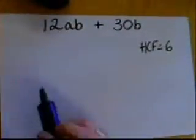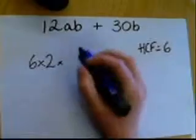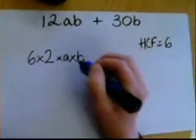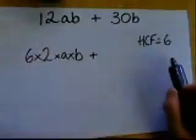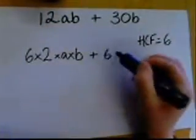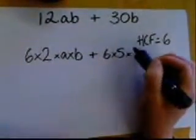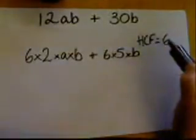Factor 12ab plus 30b. We first look for the highest common factor of the numbers. So the highest common factor of 12 and 30 is going to be 6. We're going to use that to rewrite the numbers. So 12, we can write as 6 times 2, and we're putting the ab as well so we don't leave it out. We're going to add on now 30, we can write as 6 times 5, and we'll again remember to put that b in.